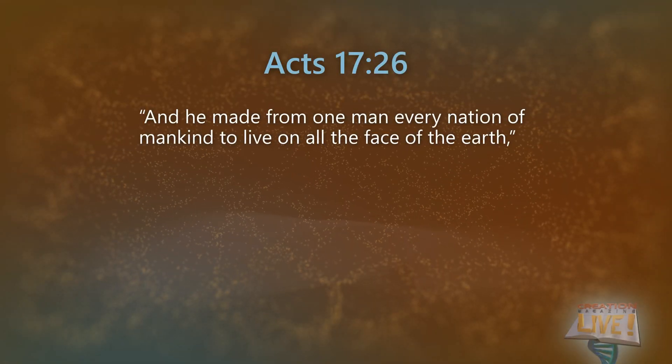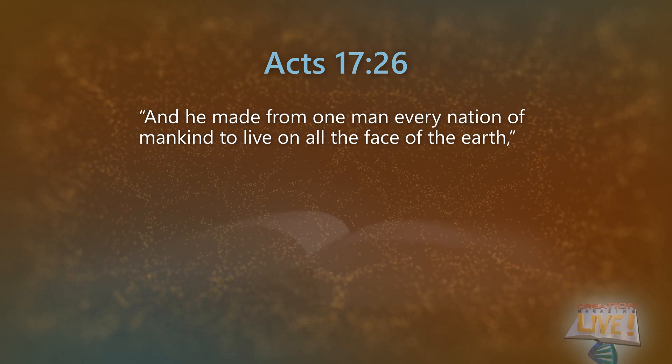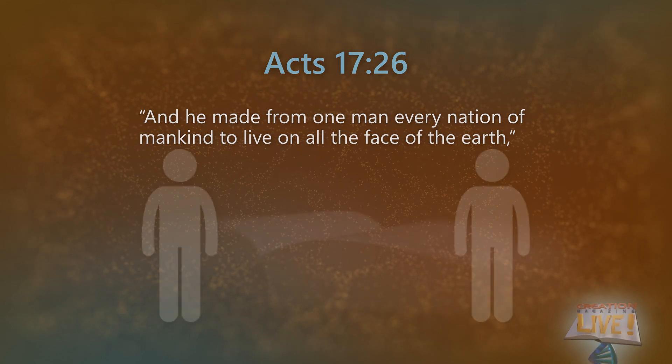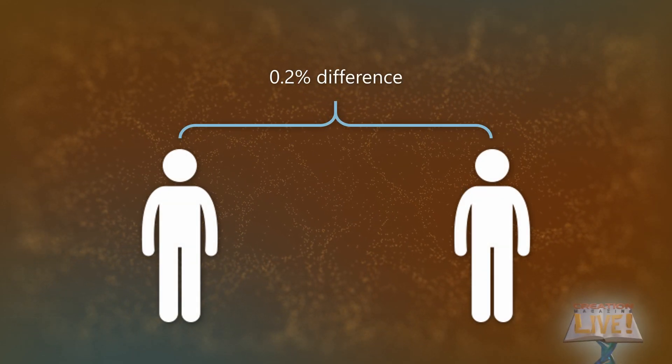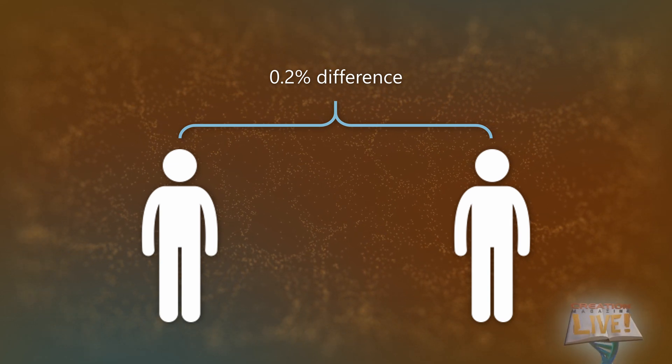Acts 17:26 affirms this. It says, 'And he made from one man every nation of mankind to live on all the face of the earth.' So from Adam came all the people everywhere — one race. We now know there's only 0.2% difference in the DNA of any two people in the world, and only 6% of that 0.2% is linked to so-called racial differences like skin colour, confirming we're all one human family, just like the scripture says. Science supports scripture again!